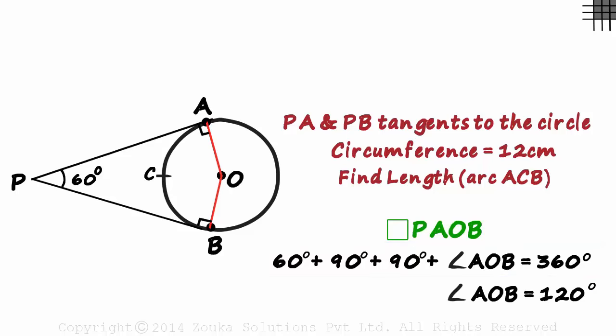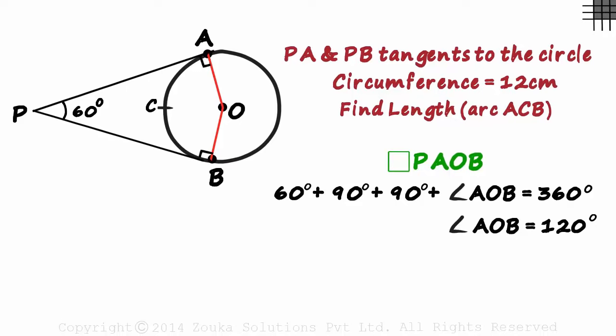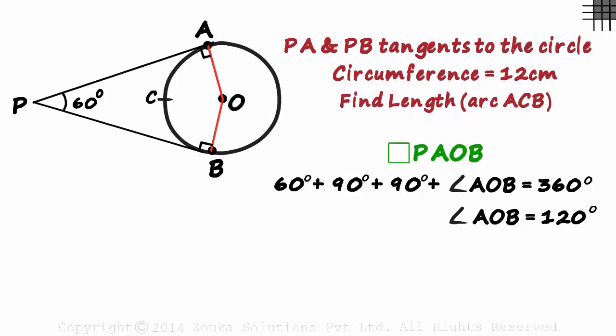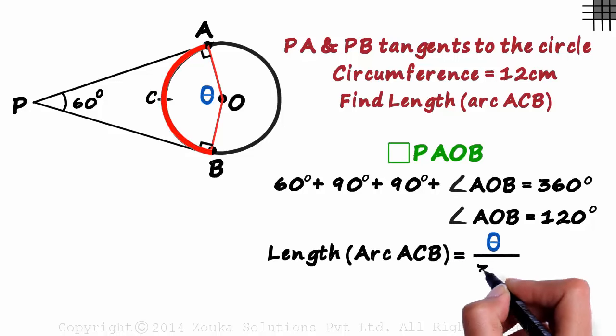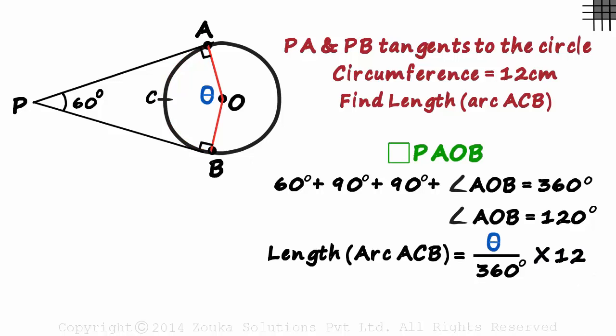Now we have everything we need to calculate the length of the arc. If the central angle is theta, we know that the length of arc ACB will be theta over 360 degrees times the circumference which is 12. We substitute 120 in place of theta and get the length of arc ACB as 4 centimeters.